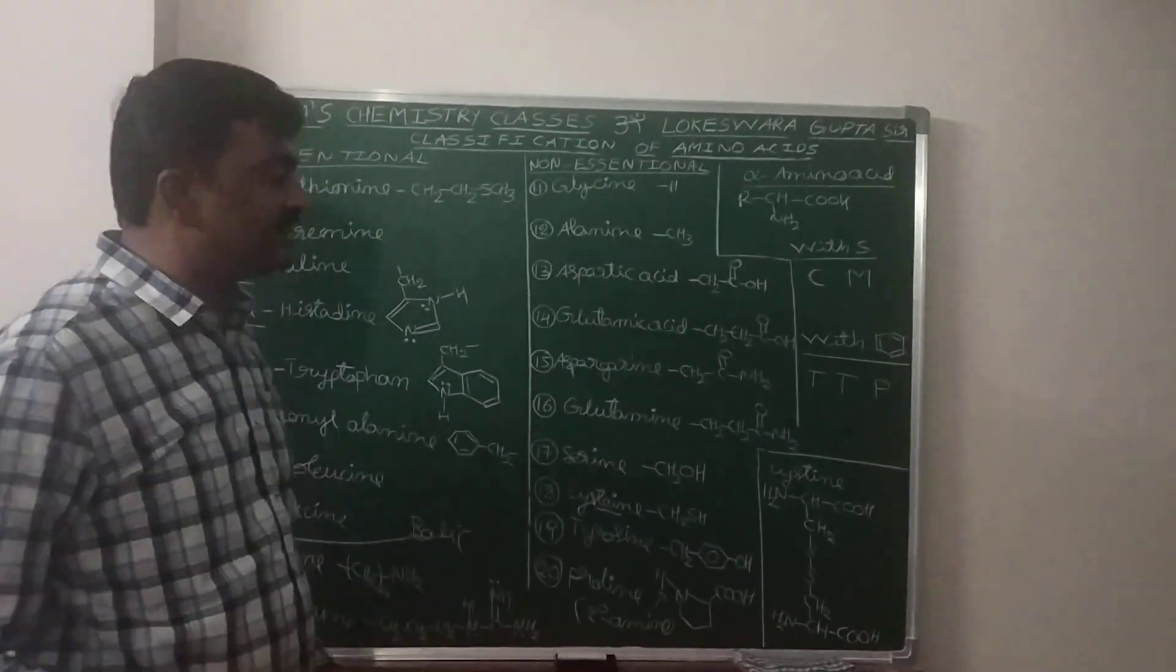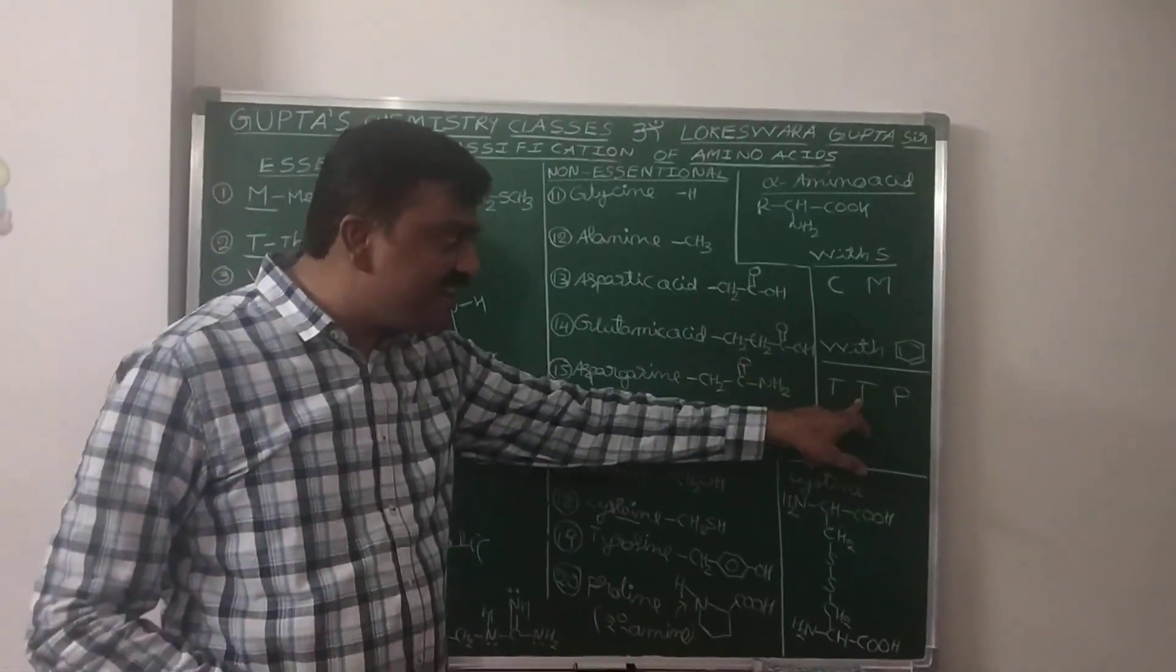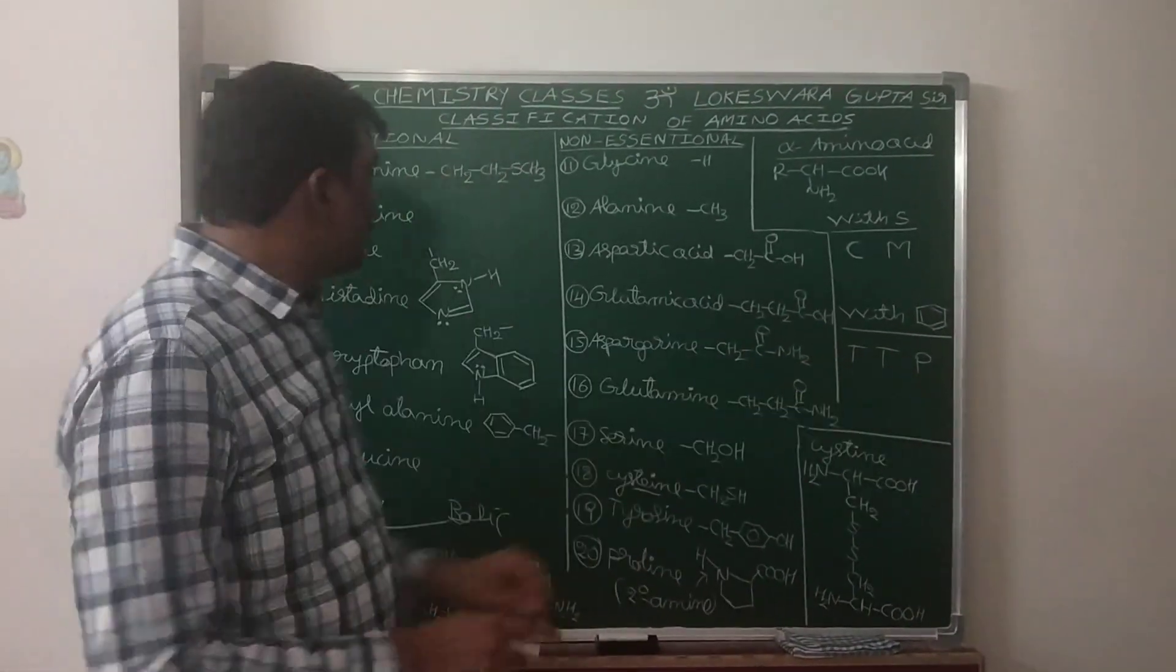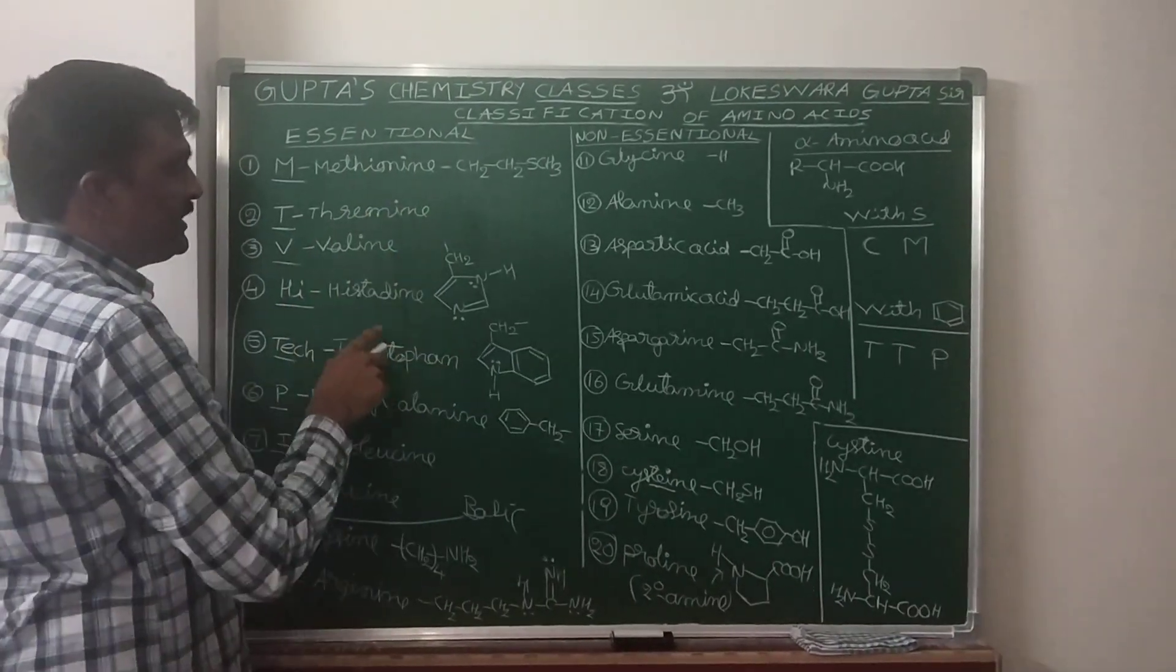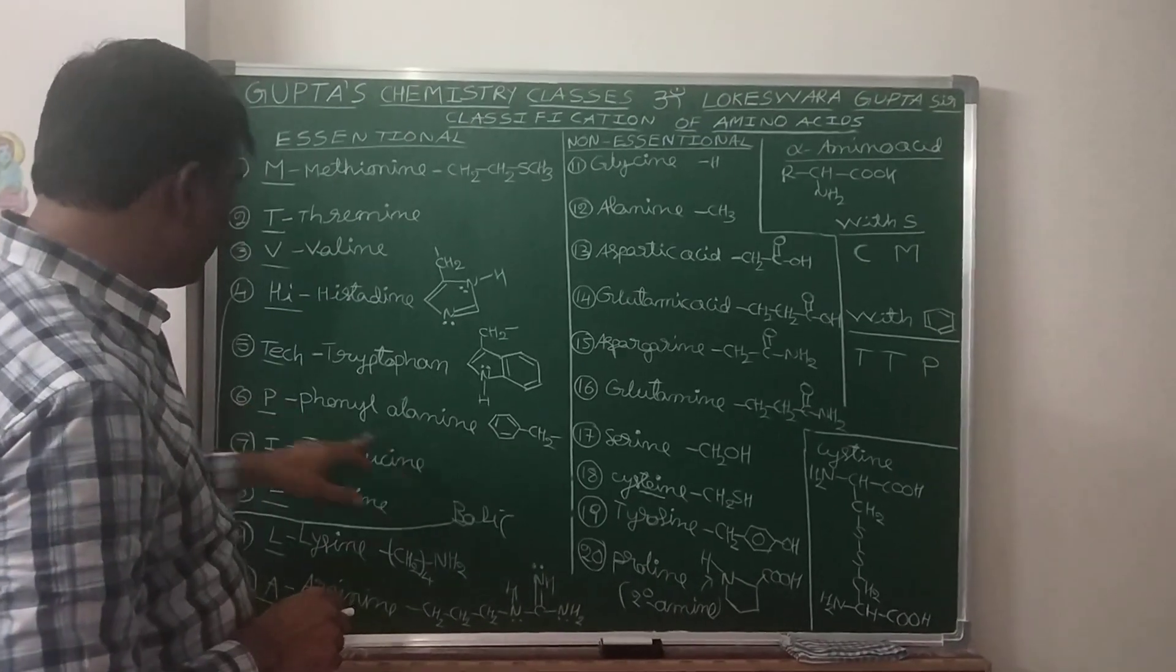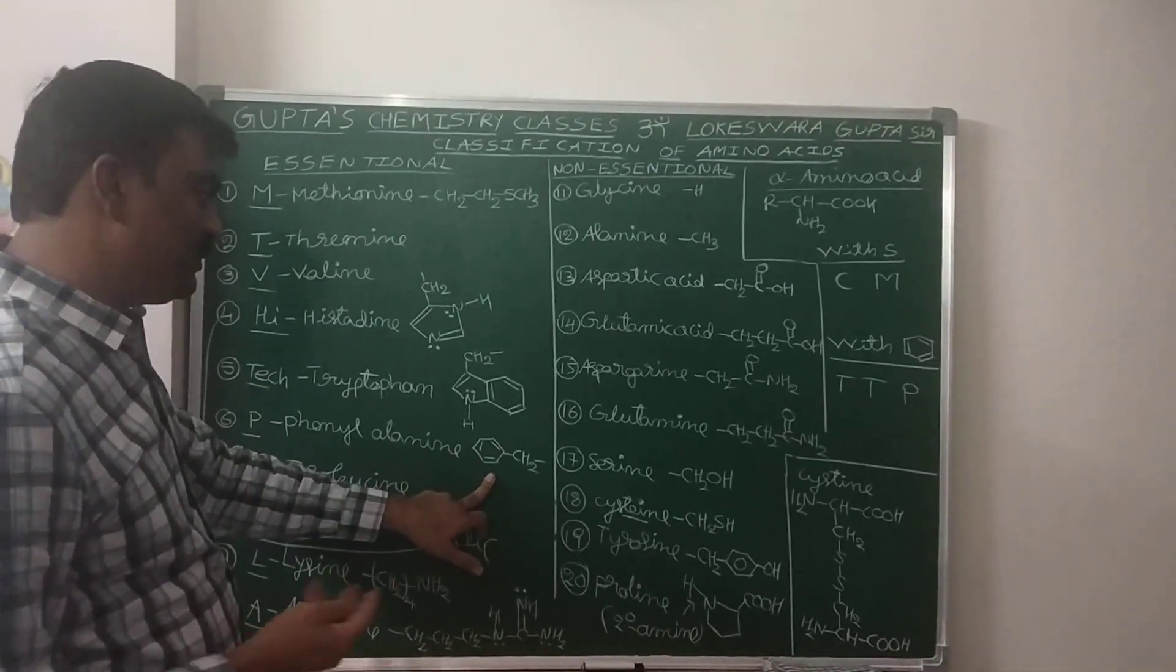TTP: P - Phenylalanine. Here benzene group, so benzene ring.